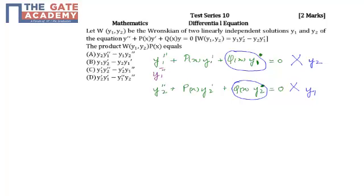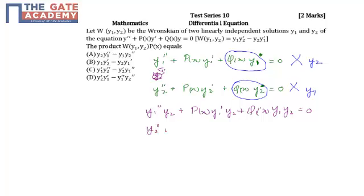After multiplying, what we have is: y1'' · y2 + p(x)·y1'·y2 + q(x)·y1·y2 = 0, and y2'' · y1 + p(x)·y2'·y1 + q(x)·y1·y2 = 0.